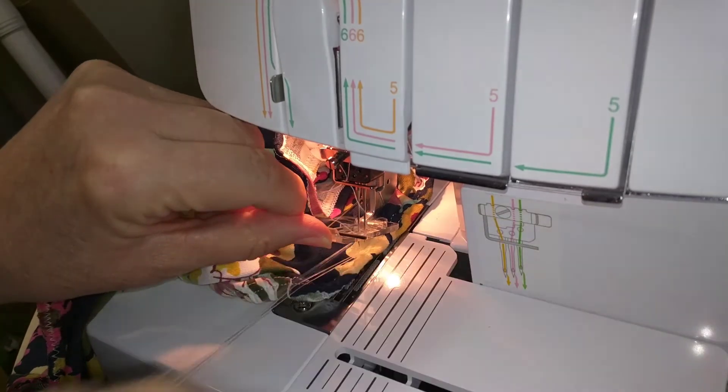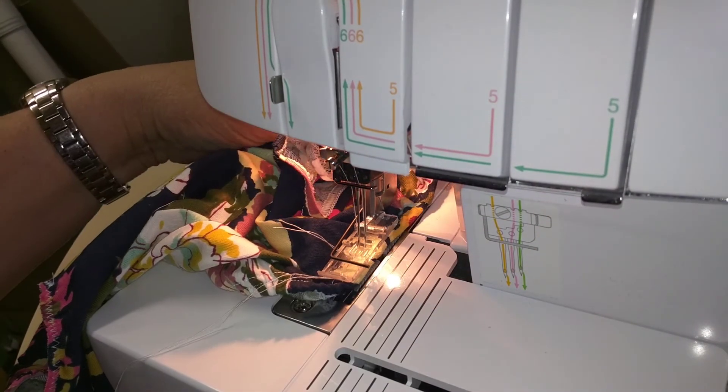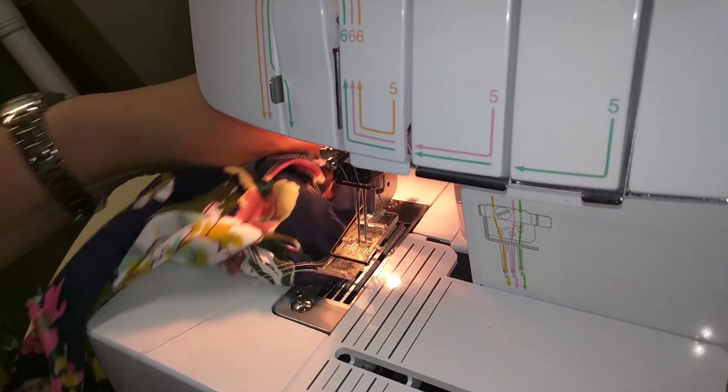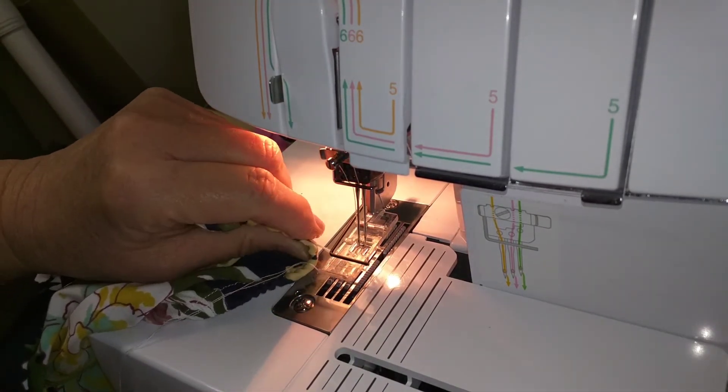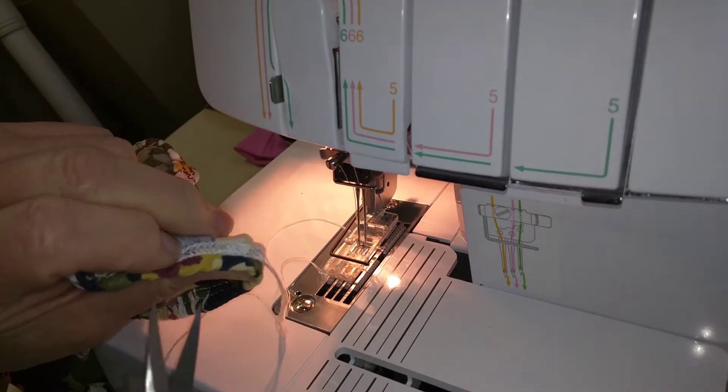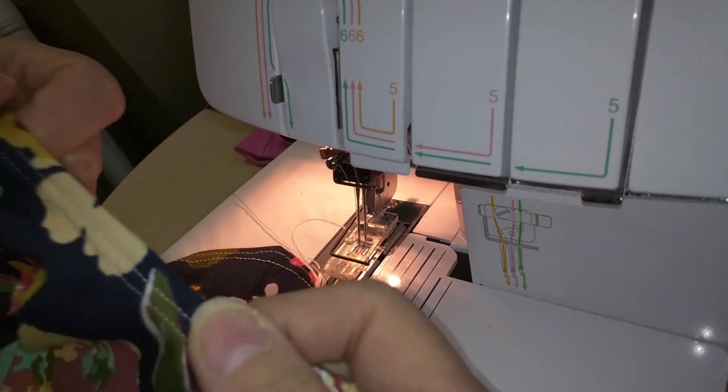And I think on this particular machine, that's what the instructions say, so you don't have to tie off. So then what I'm going to do is pull it, which pulls these two threads to the back. And then I'll pull out, and then I'll trim it. And there you go.